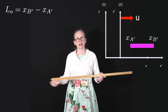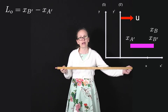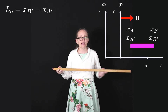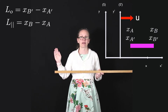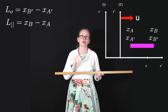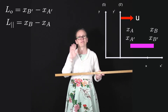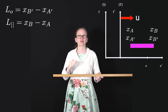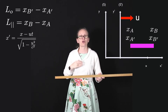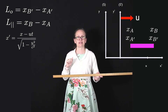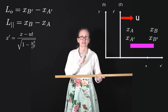In the S frame where the stick is moving with speed u along the positive x-axis, one end of the stick is at x_b and the other at x_a. The length of the stick in this frame we write as L-parallel, to indicate the reference frame is moving in a direction parallel to the movement of the stick. So L-parallel equals x_b minus x_a. We know how to transform positions from one frame to another using our Lorentz transforms, where x-prime equals x minus ut, divided by the square root of 1 minus u squared over c squared.